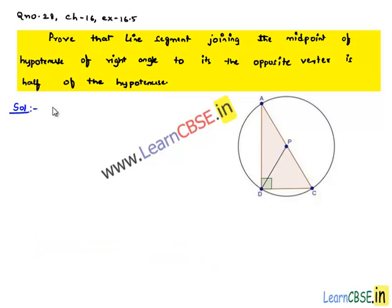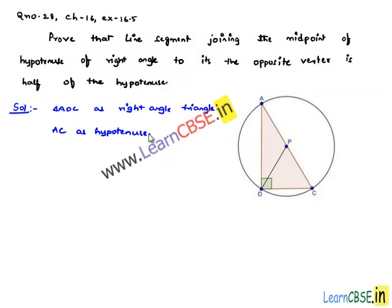Now moving on to the solution, let us consider a triangle ADC as a right angle triangle with AC as hypotenuse. A line segment joining the midpoint to the opposite vertex from the hypotenuse, that is PD, is to be proved equal to half times the hypotenuse AC. So this is required to be proved.